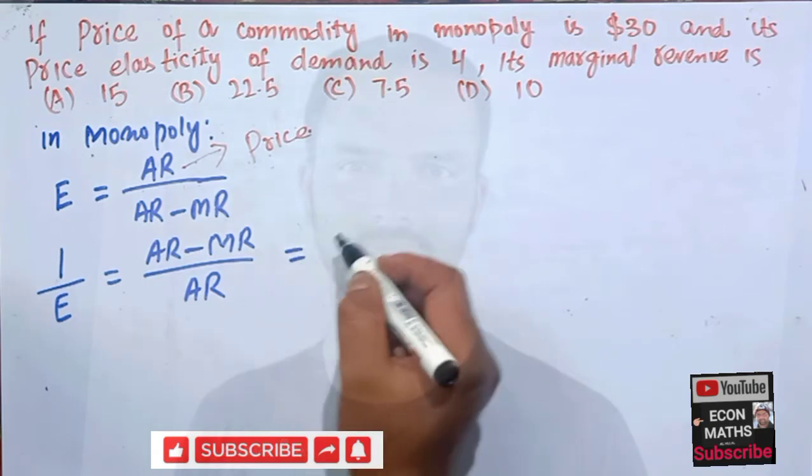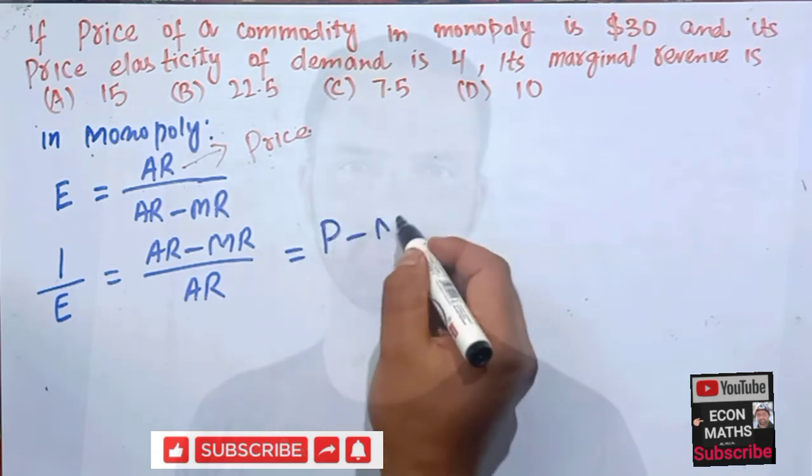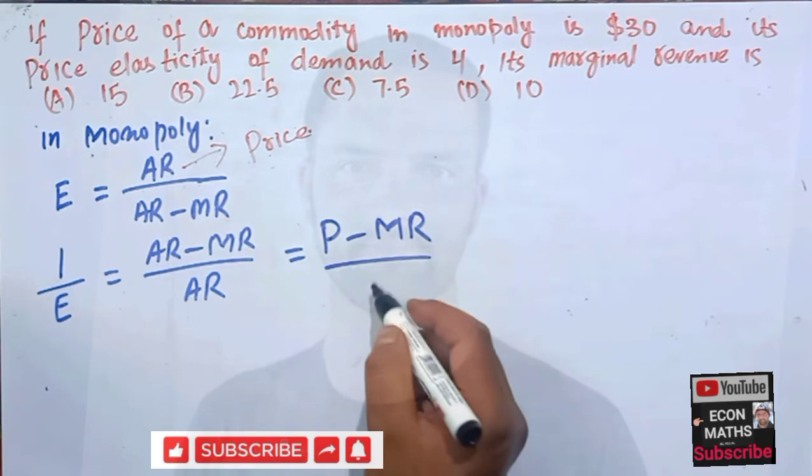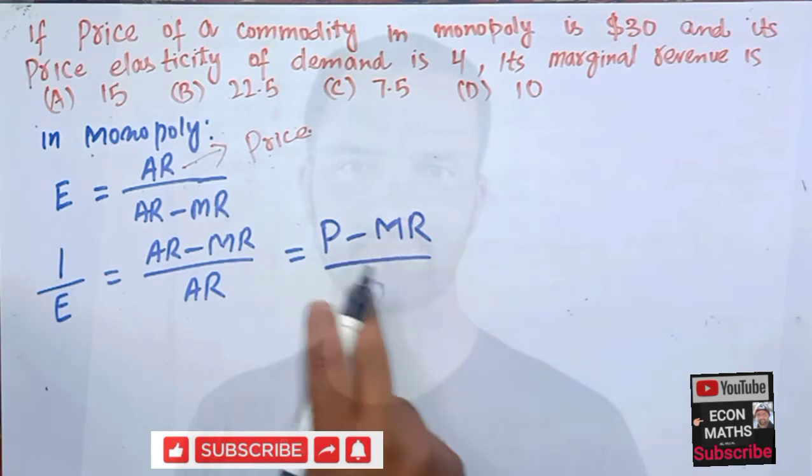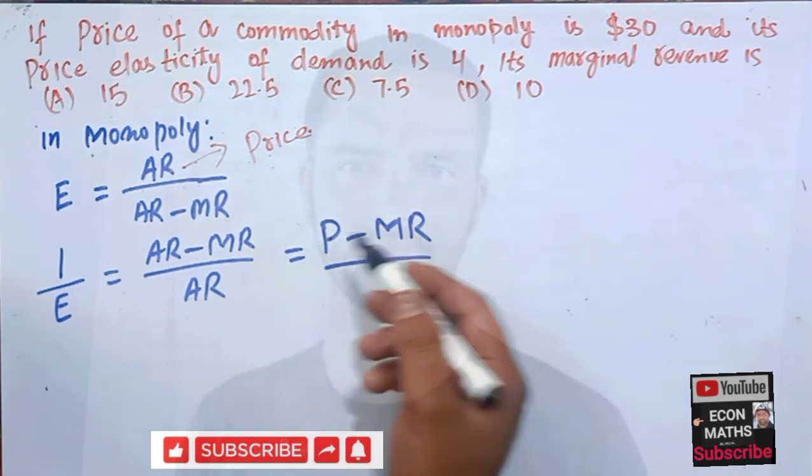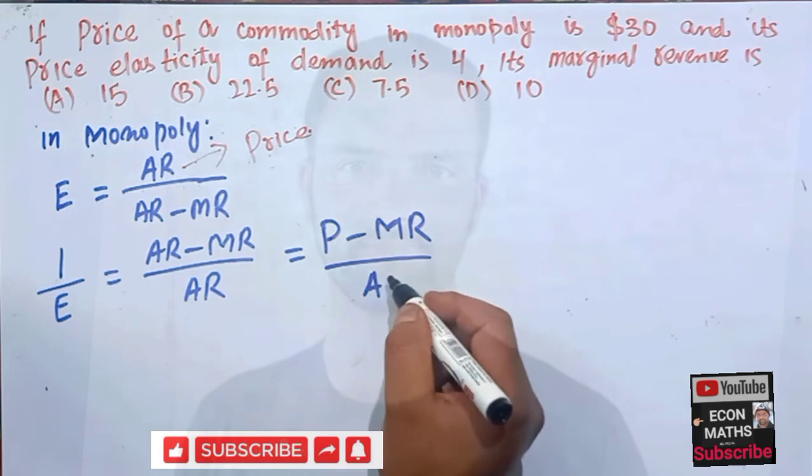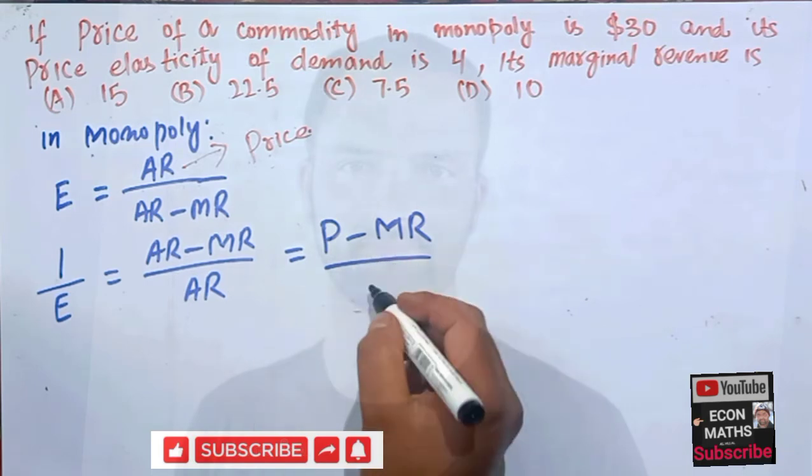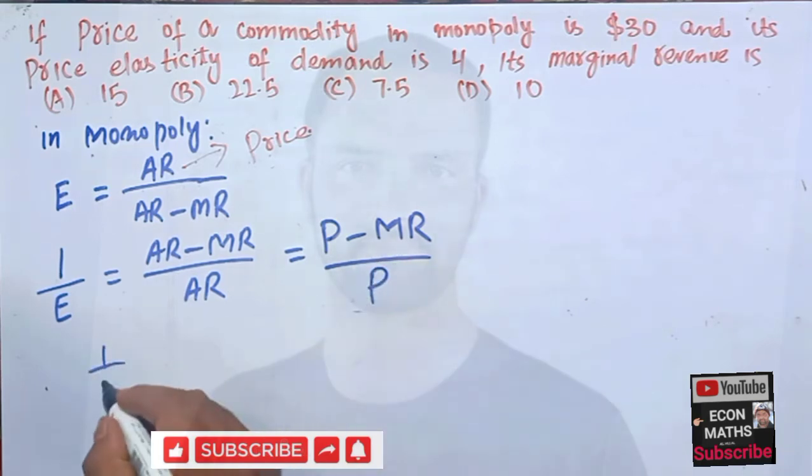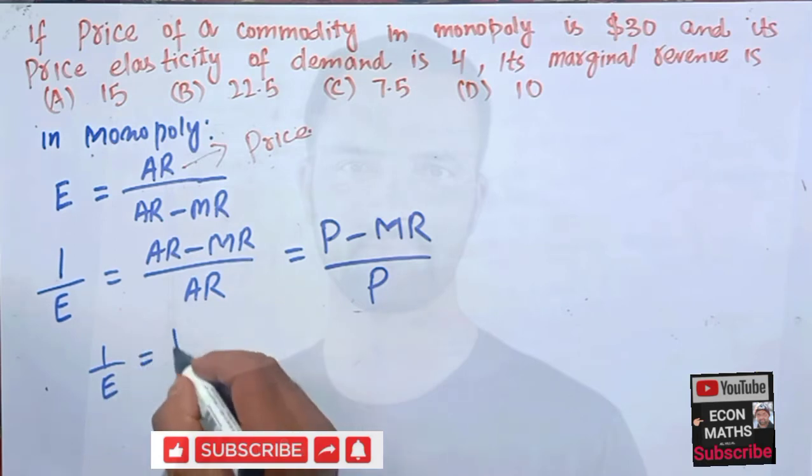Let me write it here: price, so 1/E is equal to P minus MR divided by P. Now just give the values.